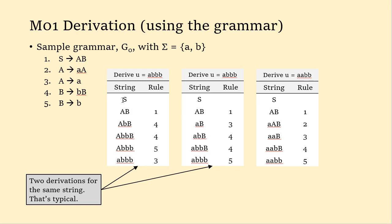If I have S, I want to replace it with something. My only choice is rule number one, so I replace S with capital A capital B. Then I use rule four to replace capital B with terminal b capital B. Then rule four again, then rule five to replace the capital B with lowercase b. And the only thing left is to replace capital A with lowercase a using rule three.